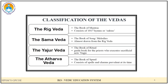The Vedas can be classified into the following types: the Rig Veda, the Book of Mantras; the Sama Veda, the Book of Songs; the Yajur Veda, the Book of Ritual; and the Atharva Veda, the Book of Spells. The whole education system during the Vedic period revolved around the study of these Vedas.